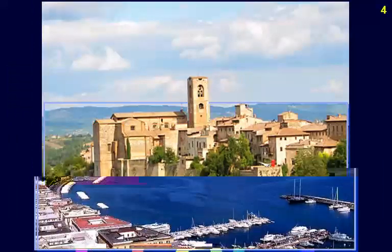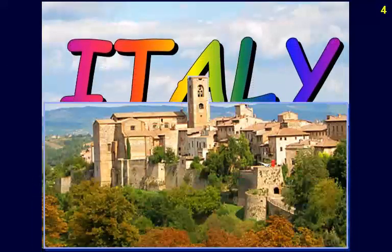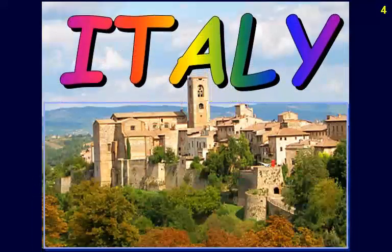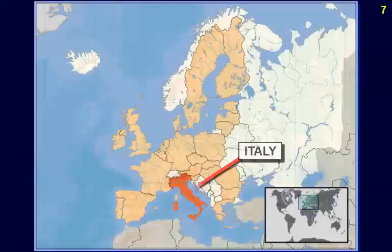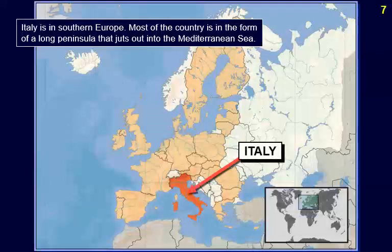This is the flag of Italy. Italy is located in southern Europe. Most of the country is in the form of a long peninsula that juts out into the Mediterranean Sea.